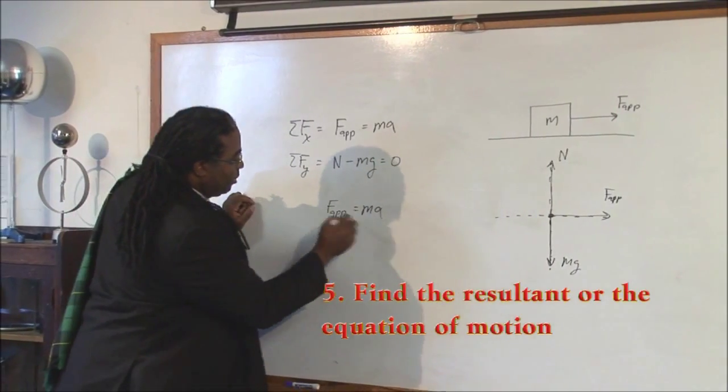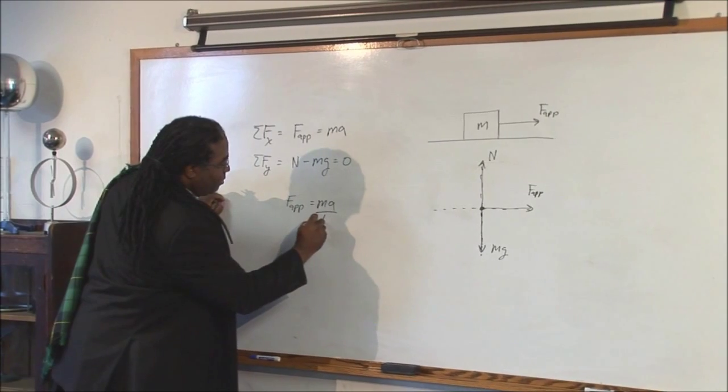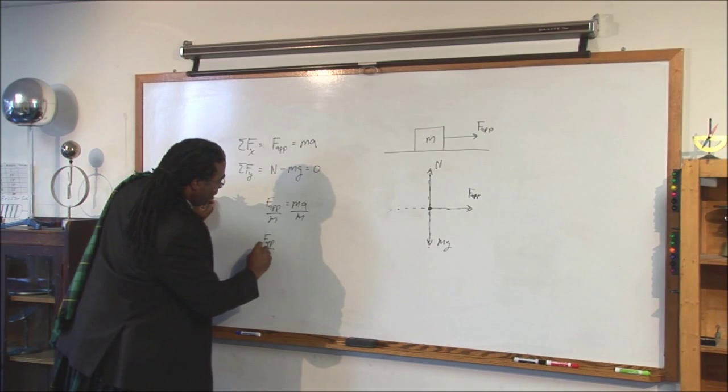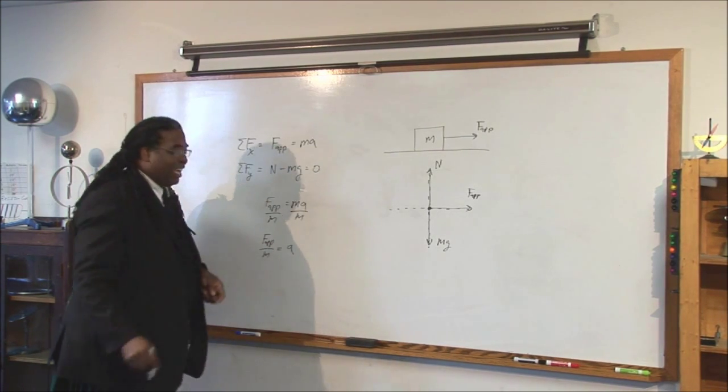The equation of motion, divide both sides by m. So, F applied divided by m equals a.